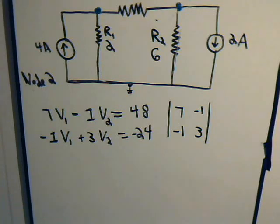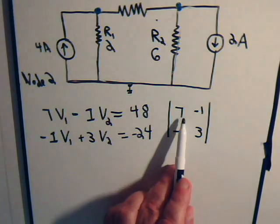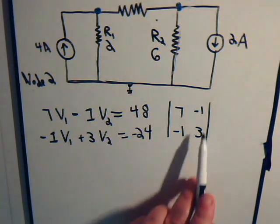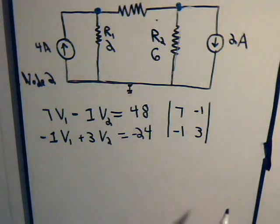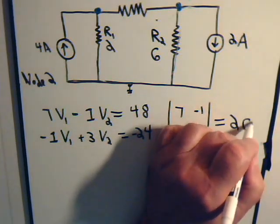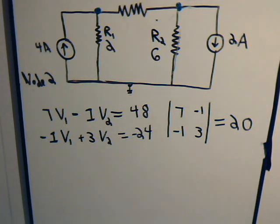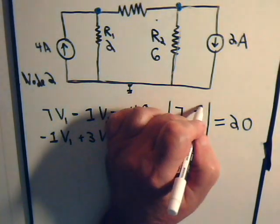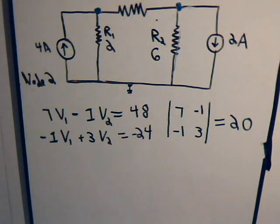And we want to know what is the numerical value of this determinant. So we have 21 minus 1, so that determinant has a value of 20.